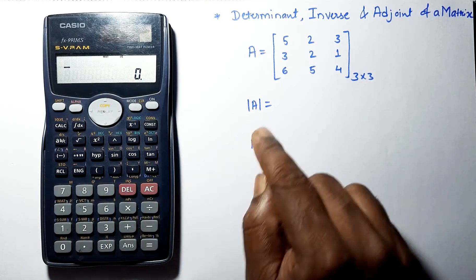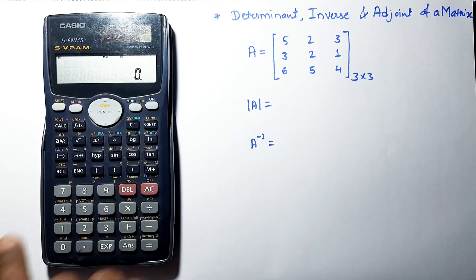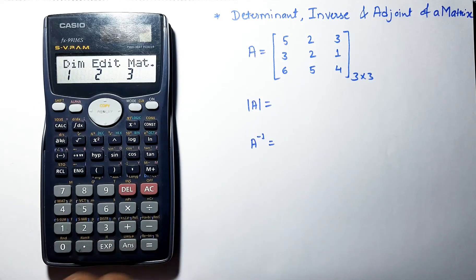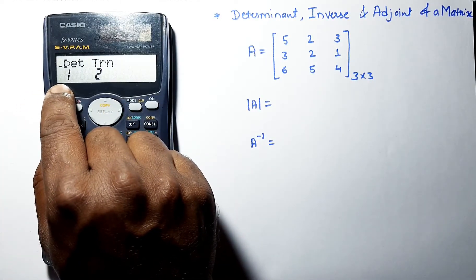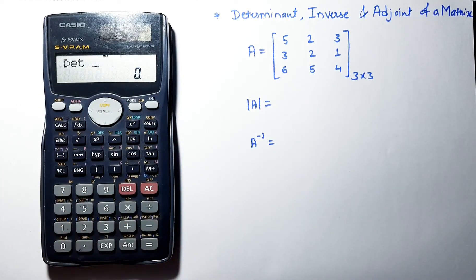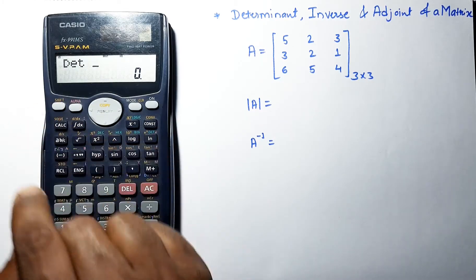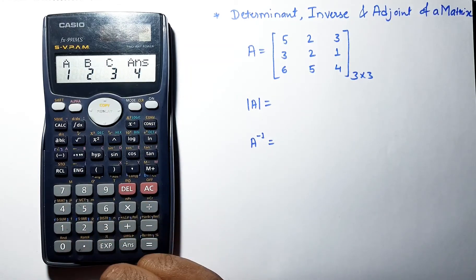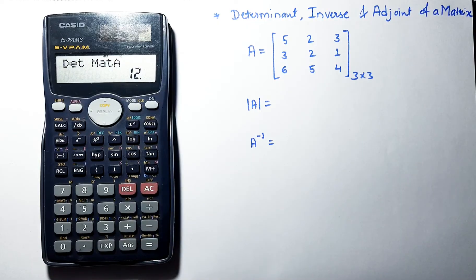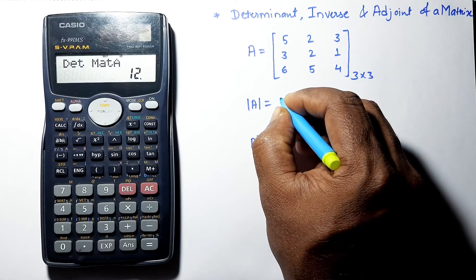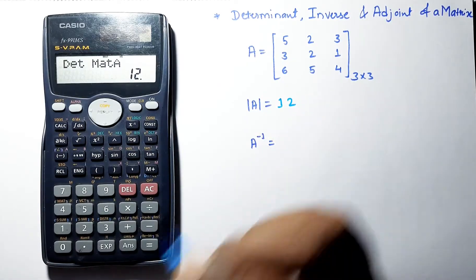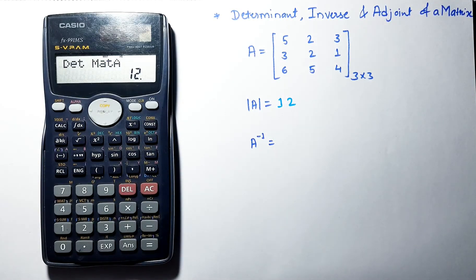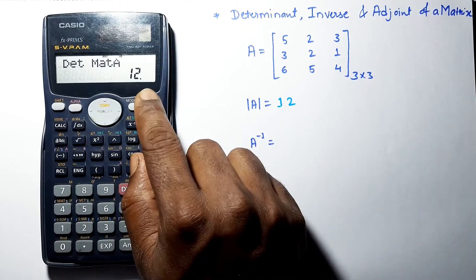Now first we will find the determinant of the matrix. Select matrix, then select determinant. Go to the mat option 3 and select matrix A, then press equals.